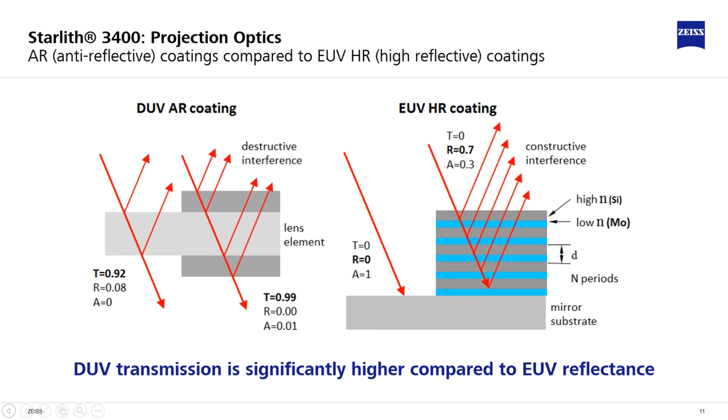the losses due to reflectance can practically be reduced to zero, at the expense of some absorption in these coatings. In total, still the transmission can be increased roughly from 92% to 99%.